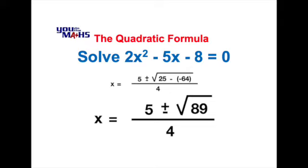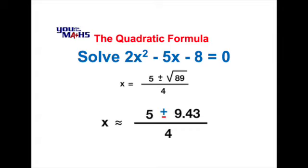At this point we may wish to find an exact solution, which means leaving it in square root form. But in this example, we'll determine the square root of 89 using a calculator, which comes to approximately 9.43.